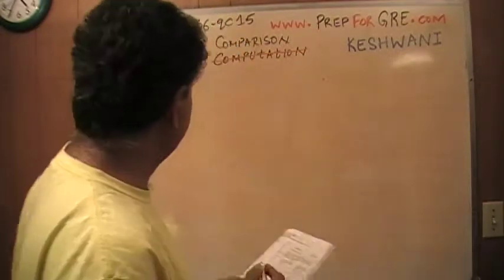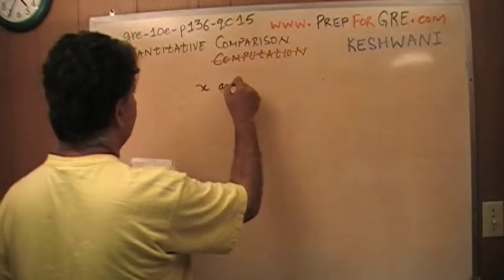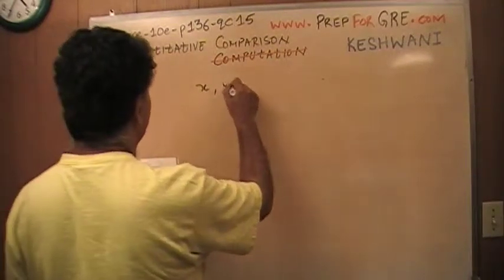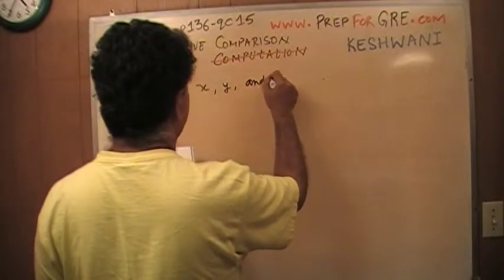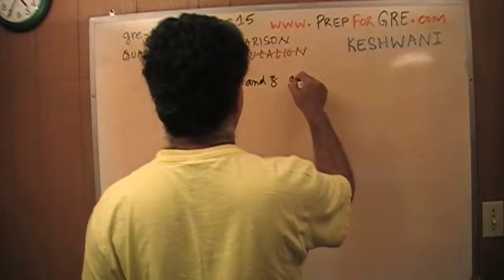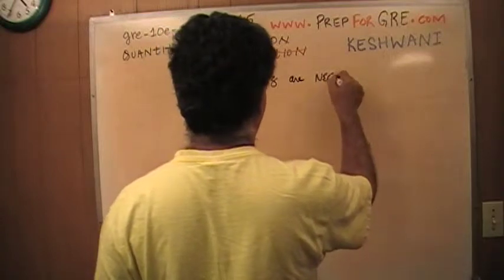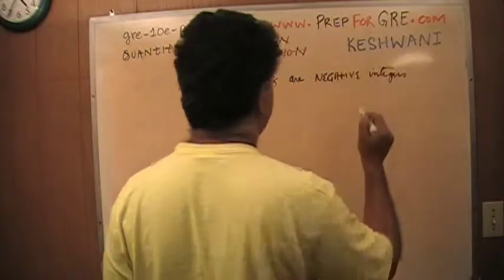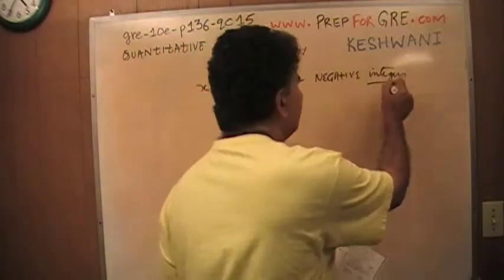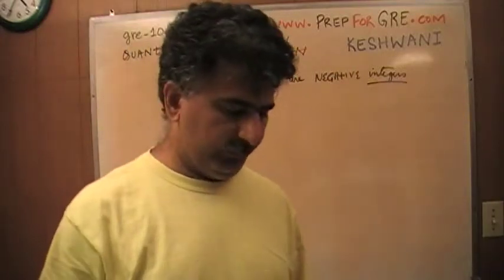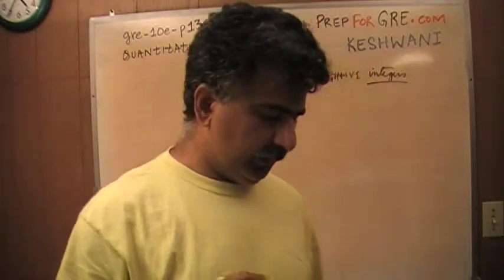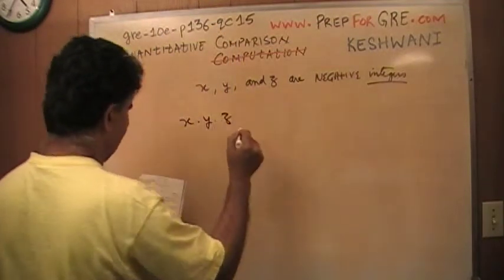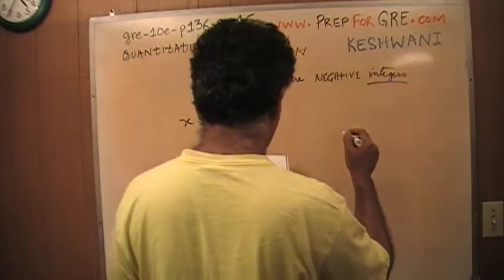Let's see what it says. x, y, and z are negative integers. Negative integers means they have to be whole numbers and they have to be negative. We are asked to compare the product of x times y times z and the sum of x plus y plus z.